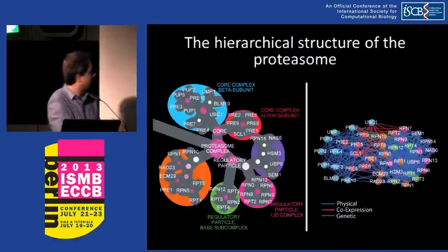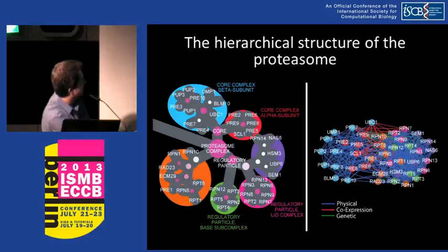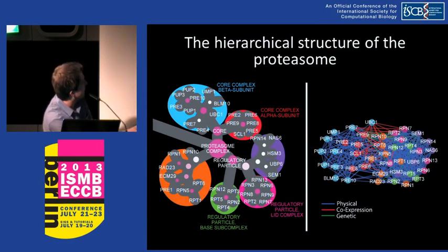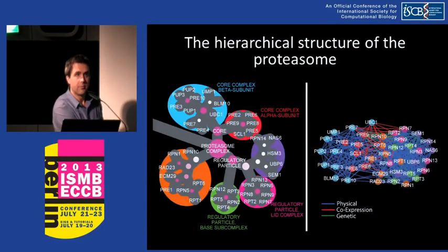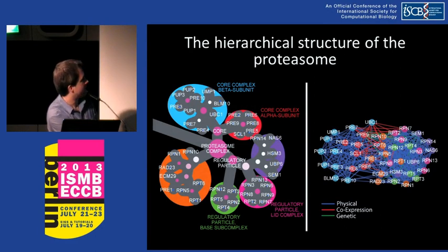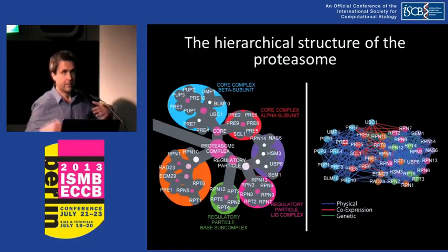A textbook example of a fairly small hierarchical structure we discovered is the proteasome complex, which itself has two or three levels of hierarchy. The proteasome complex splits into the core and the regulatory particle; the core splits into the beta subunit and the alpha subunit; the regulatory particle splits into the base and lid subcomplexes. We think this is much more useful representation of the network data than the typical hairball view often shown in papers — it's much more interpretable at different scales.